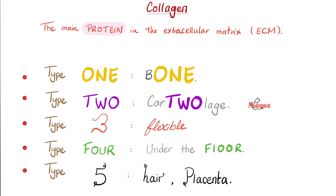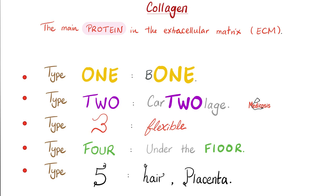Let's review some collagen. Type 1 is in bone. Type 2 is in cartilage. Type 3 is very flexible and pliable, so you find it in vessels because they need to be flexible. Type 4 is under the floor — i.e., the basement membrane. And type 5 is in hair and placenta.